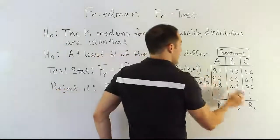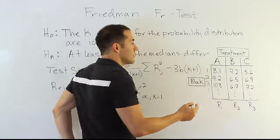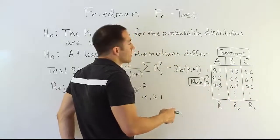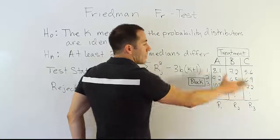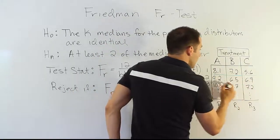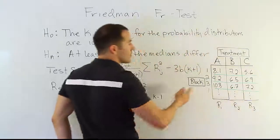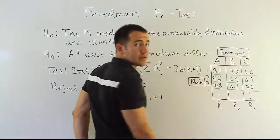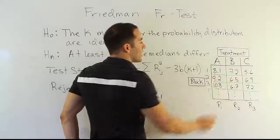What you're going to do is, instead of ranking all the data the way we did in the previous test that we learned, instead of doing that like we did in Kruskal-Wallis, we're going to actually rank across the blocks only. This is going to make our ranking really simple because generally you won't have that many treatments.